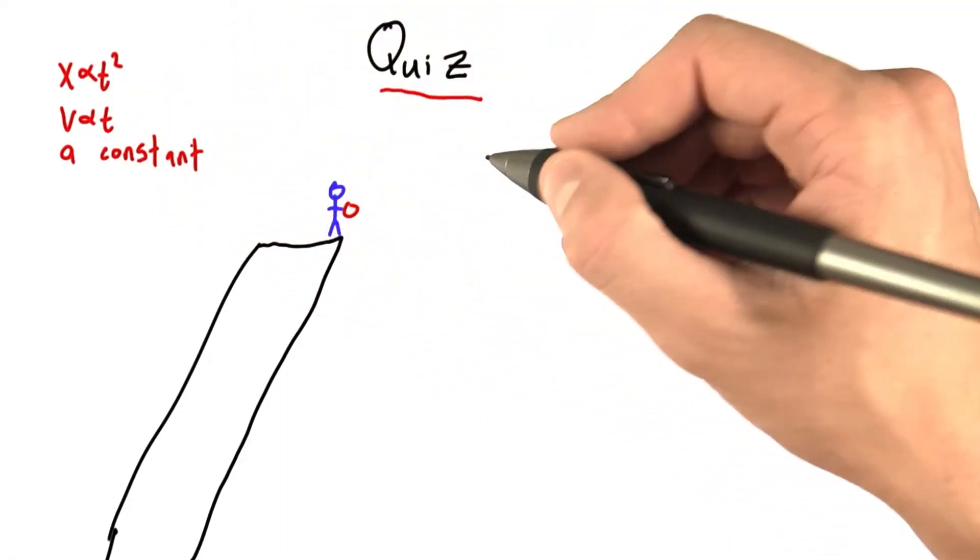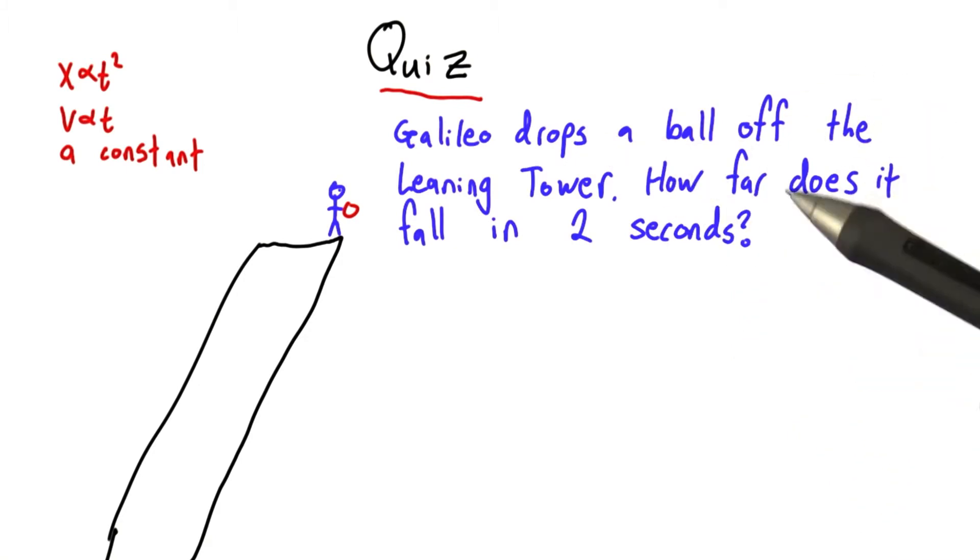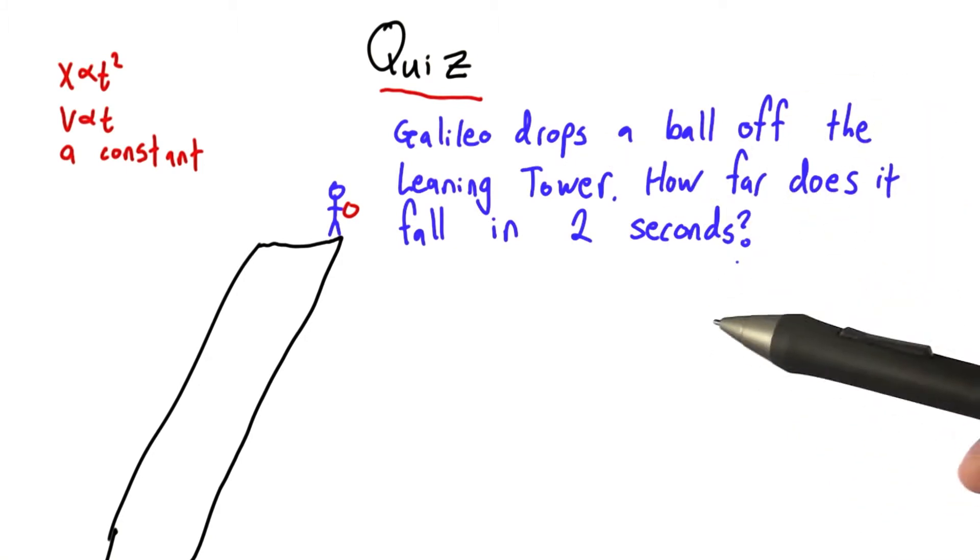So we've really learned a lot, and surely we'll be able to answer a simple question, right? For example, if Galileo drops a ball off the leaning tower, how far does it fall in 2 seconds? Can we answer that?